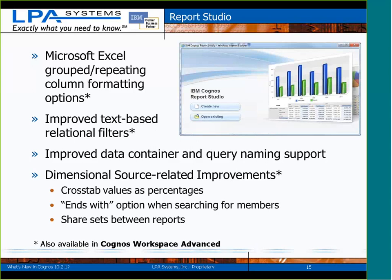From a dimensional source only perspective — this won't work with relational packages, but with cube packages and DMR packages — when you add numbers to a crosstab, you can now choose whether the values are displayed as raw values like revenue dollars, or as a percentage of one of the totals on the axes, either your row axis or your column axis. You can switch back and forth between actual values and percentages when defining your report.